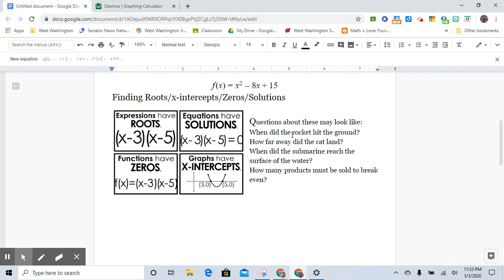So what this could look like is, when did the rocket hit the ground? That would be an inverted parabola there. And when would it hit the ground? When is the elevation of the rocket 0? How far away did the cat land? And so this may have been its starting point. It jumped, and then it landed this far away.